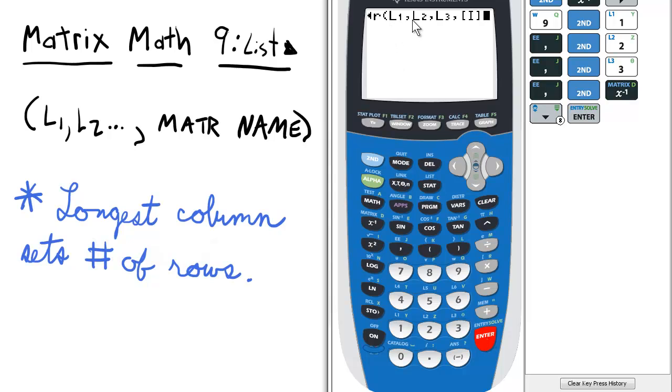So basically L1 and L2 and L3 will serve as the first, second, and third columns of matrix I.